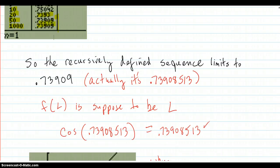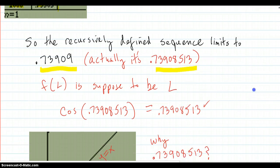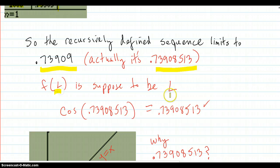The recursively defined sequence limits to 0.73909, but actually it's 0.739085513. I'll show you how we got that in a second. So f(L) is supposed to be L. Cosine of this number does indeed check out to be this number.